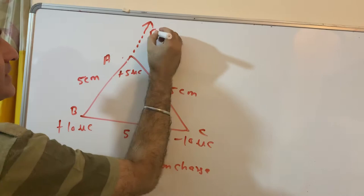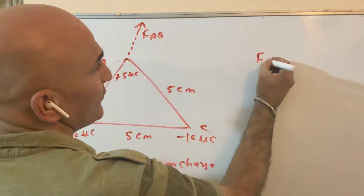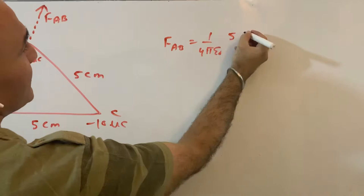This you will write as F_AB. It will be like Coulomb's law, so you can find F_AB = 1/(4πε₀) times one charge is 5 microcoulomb.